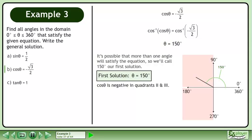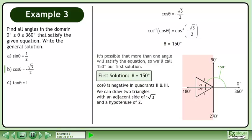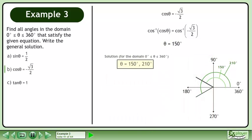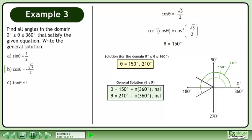Cos θ is negative in quadrants 2 and 3. We can draw two triangles with an adjacent side of negative root 3 and a hypotenuse of 2. Both of the reference angles are 30 degrees. The second solution is θ equals 210 degrees. The solution over the domain where θ is between 0 degrees and 360 degrees is θ equals 150 degrees and 210 degrees.